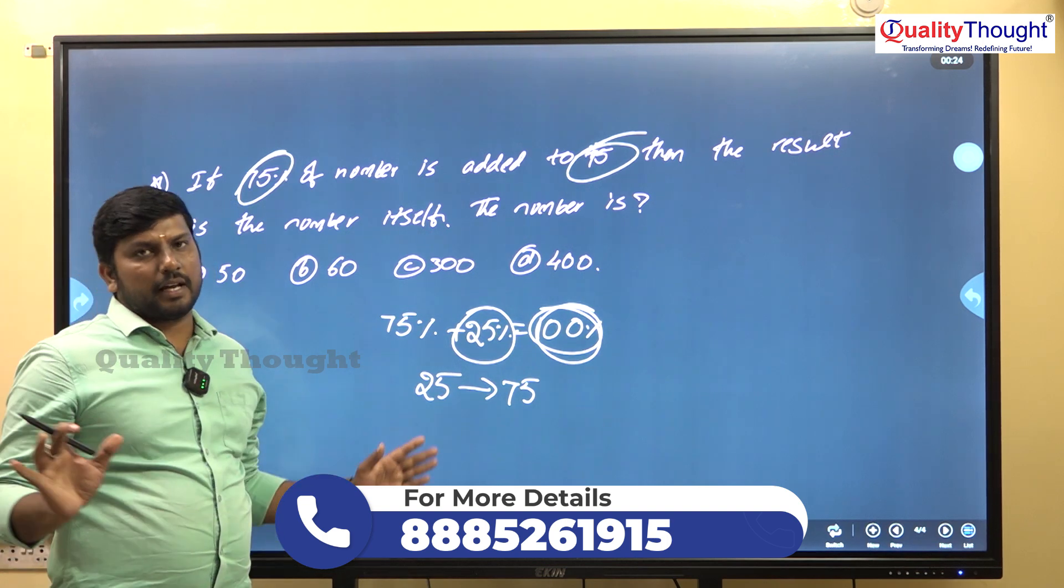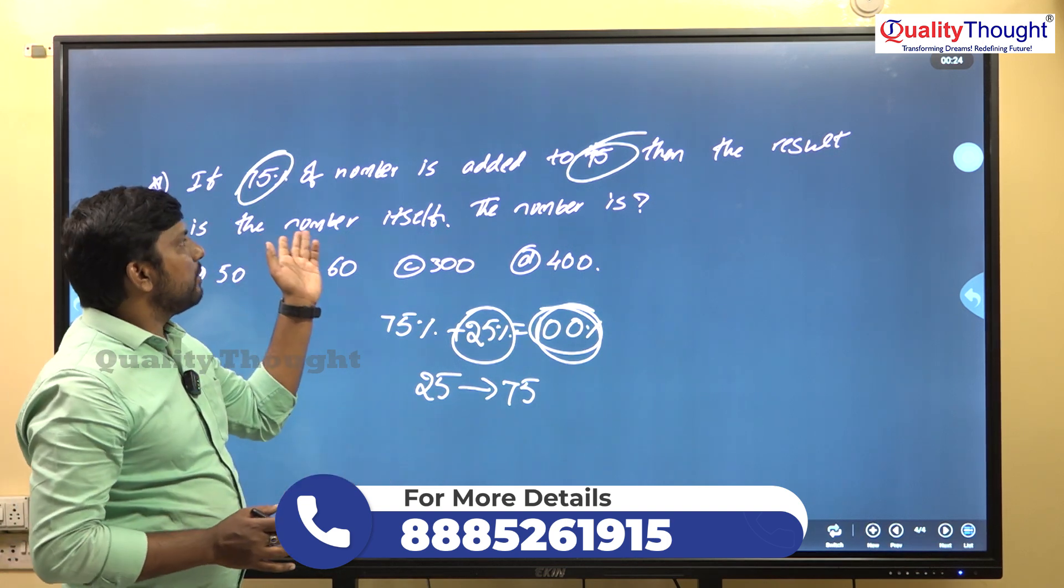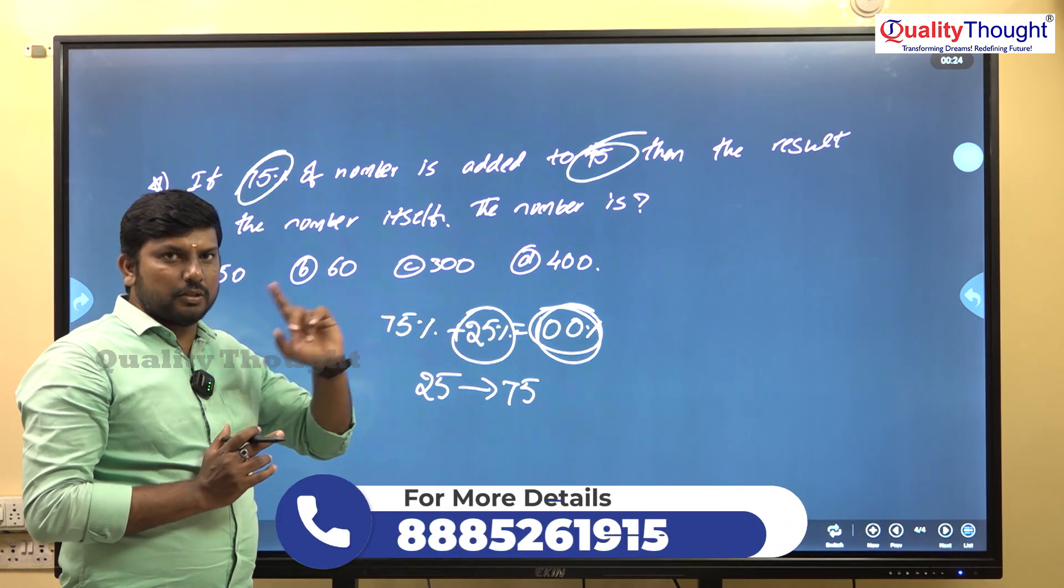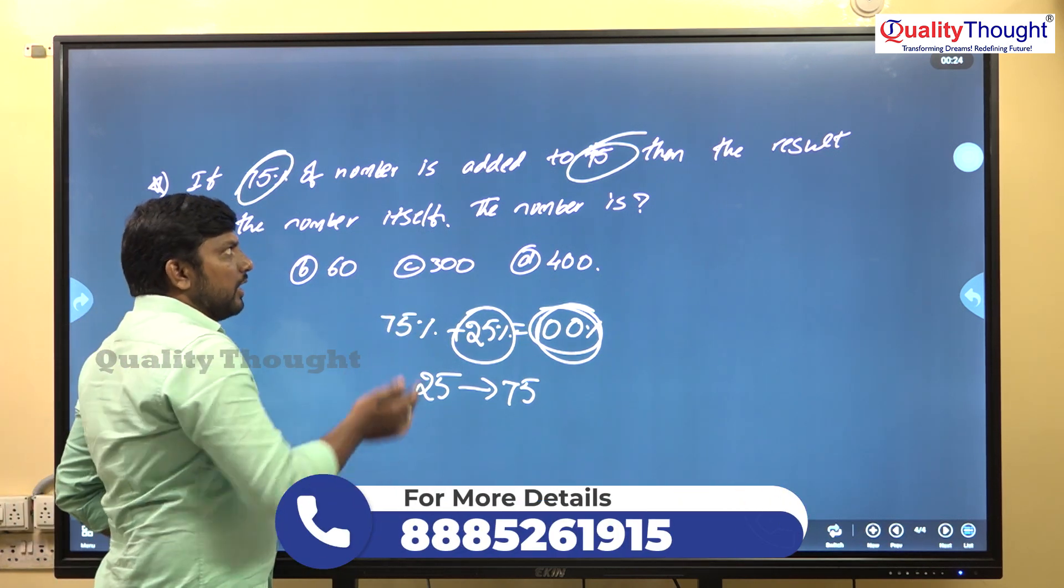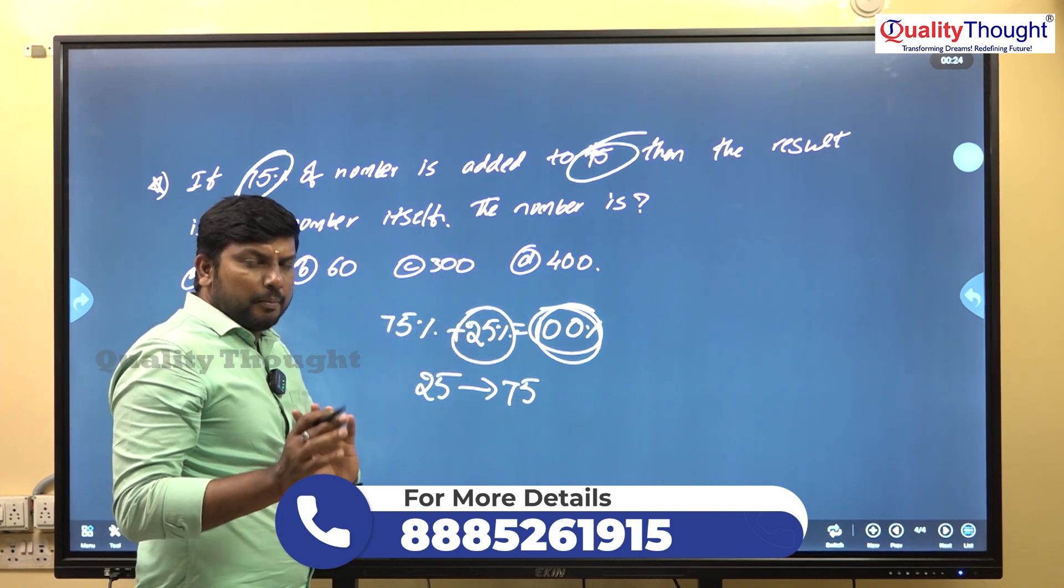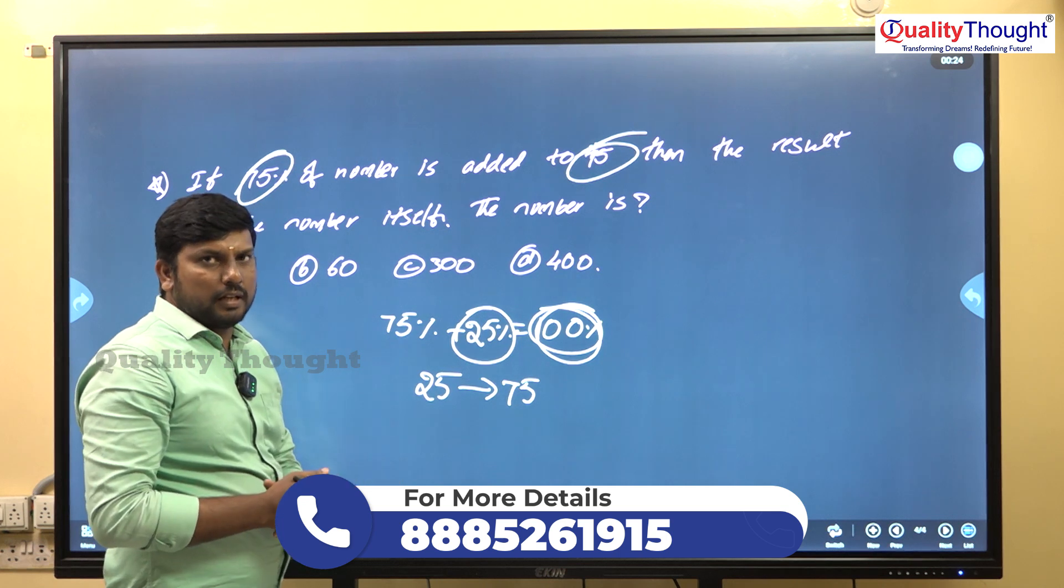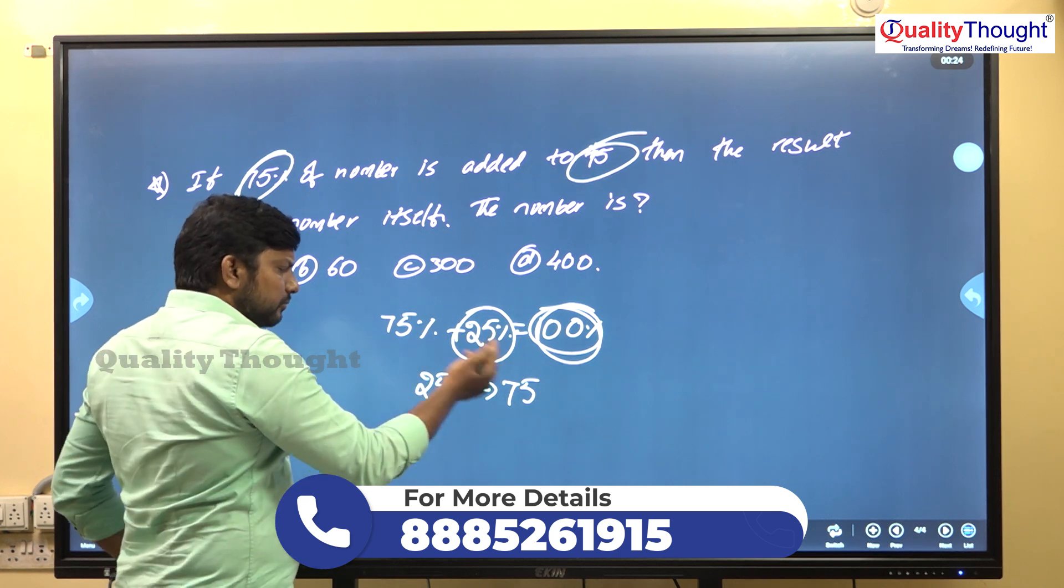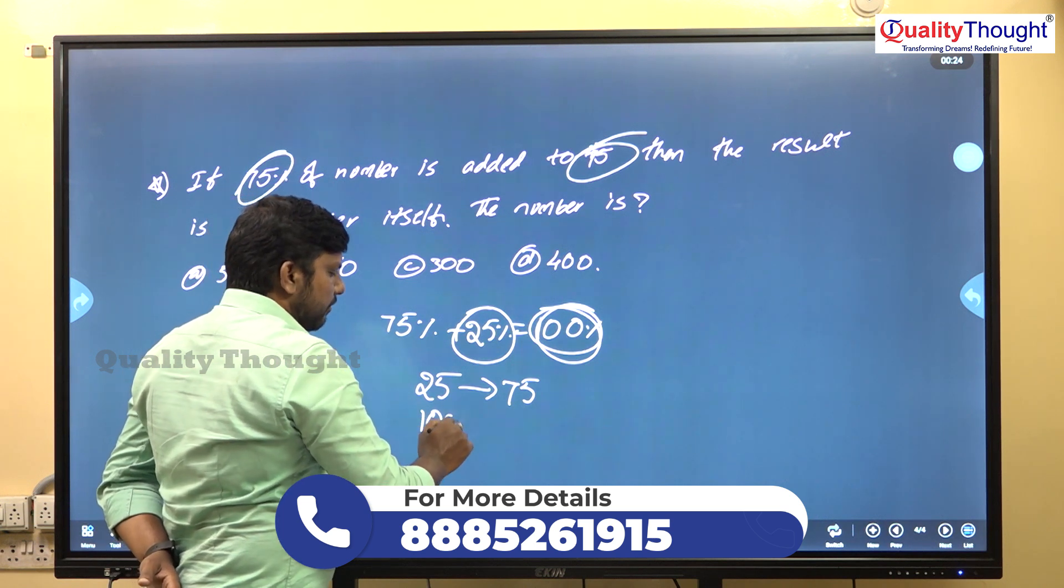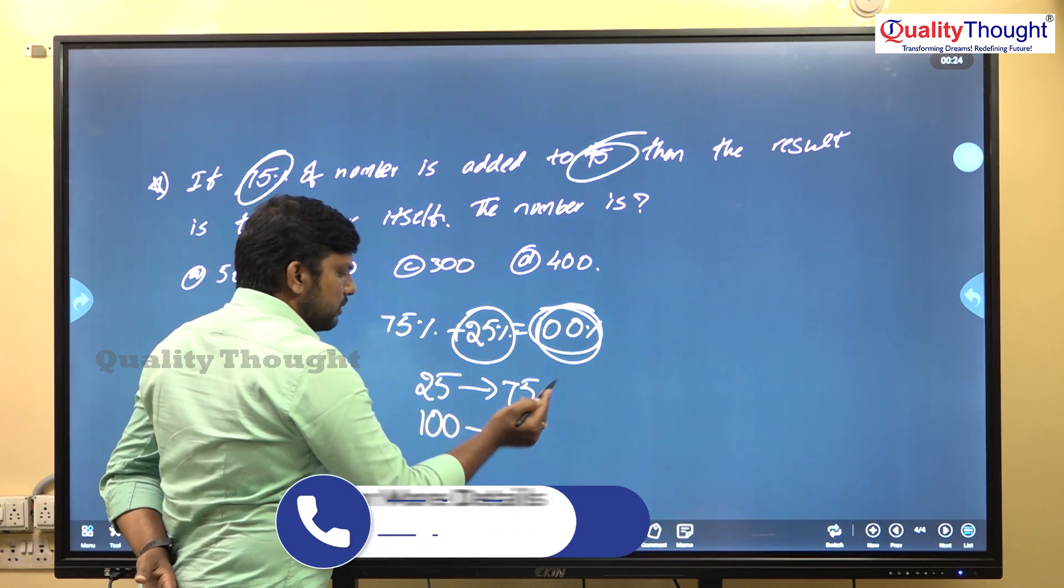That 25 percent is what we're given as the number. So 25 percent of that number is 75 rupees. Once we have this clarity, it becomes easy.